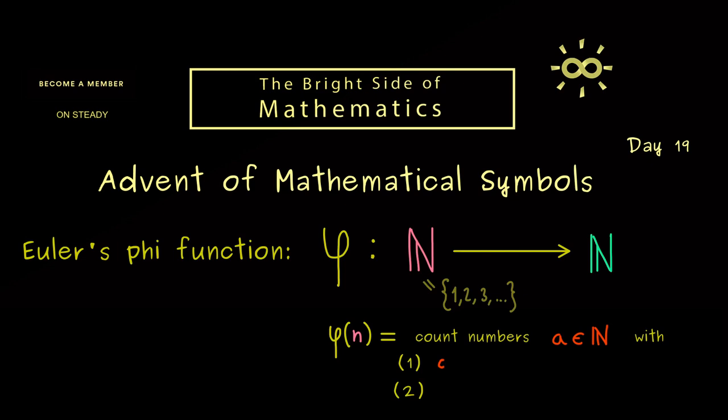The first one is very simple. We only consider numbers that are less than or equal to n. This means that the outcome of the phi function can never be greater than the input.